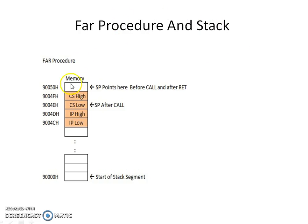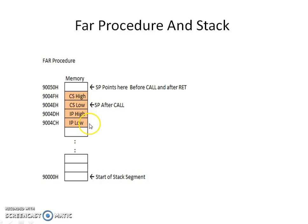For a FAR procedure, the procedure is outside the current code segment, so you are jumping to another code segment. Therefore, you have to push both CS high and CS low as well as IP high and IP low onto the stack. After the CALL, SP points accordingly, and after the RETURN instruction, control comes back to the top of the stack.